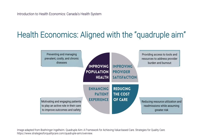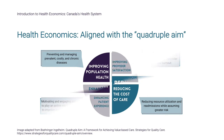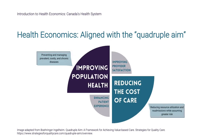The quadruple aim was developed by the Institute for Health Improvement and has a goal of optimizing health system performance. This framework has been adopted by many health systems. Improving population health and reducing cost of care are two of the four components of the quadruple aim, and health economics is aligned with achieving these objectives.